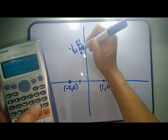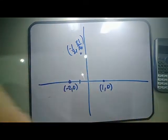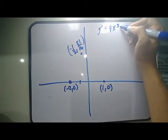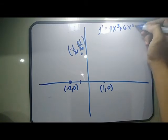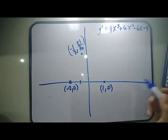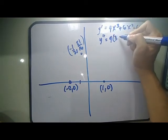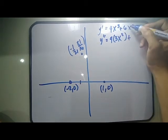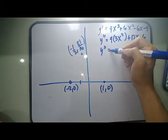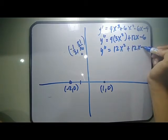Using the second derivative test, recall that y prime equals 4x cubed plus 6x squared minus 6x minus 4. So y double prime — we just get the second derivative of the function — this is 4 times 3, which is 12x squared, plus 2 times 6, which is 12x, minus 6. So y double prime equals 12x squared plus 12x minus 6.